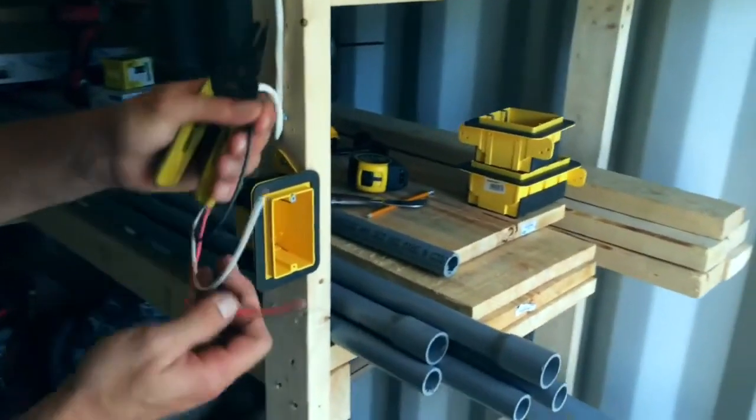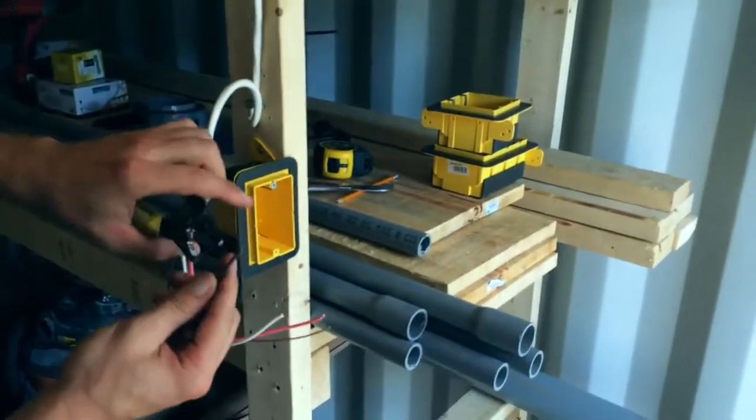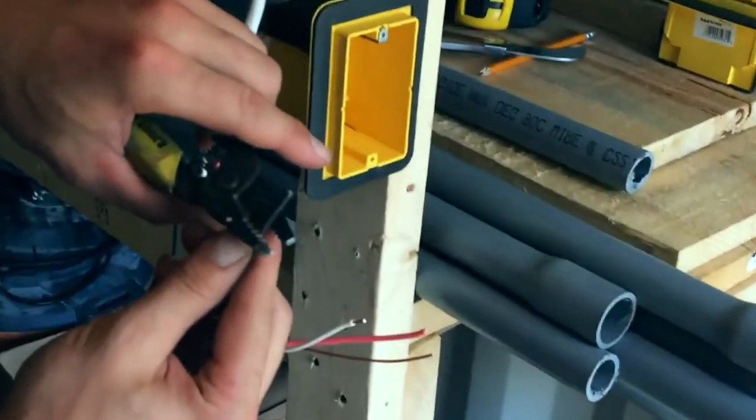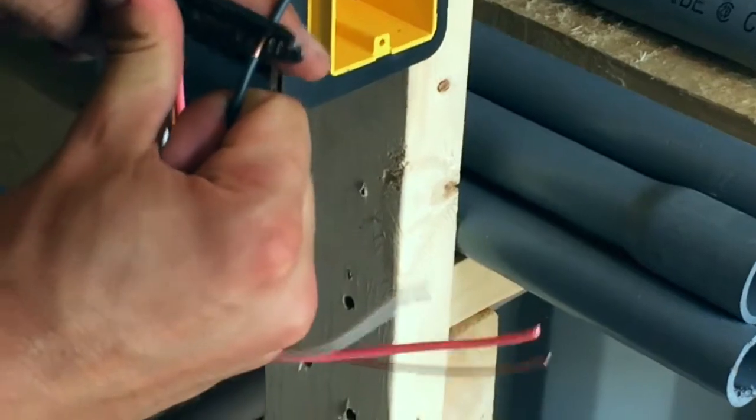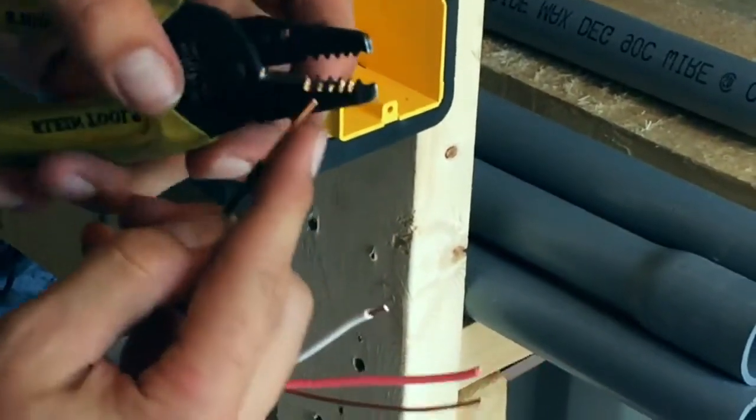Essentially, we'll just show you on the black conductor. So we'll line up our 14 gauge in our proper slot here and then we'll strip it. There you go. Just like that, that's pretty easy.